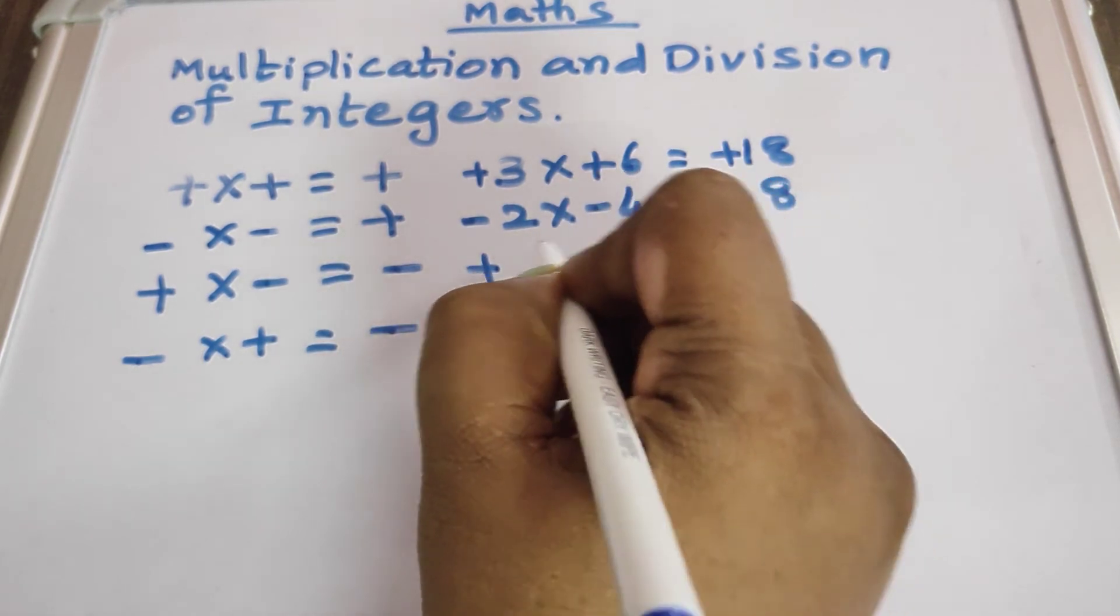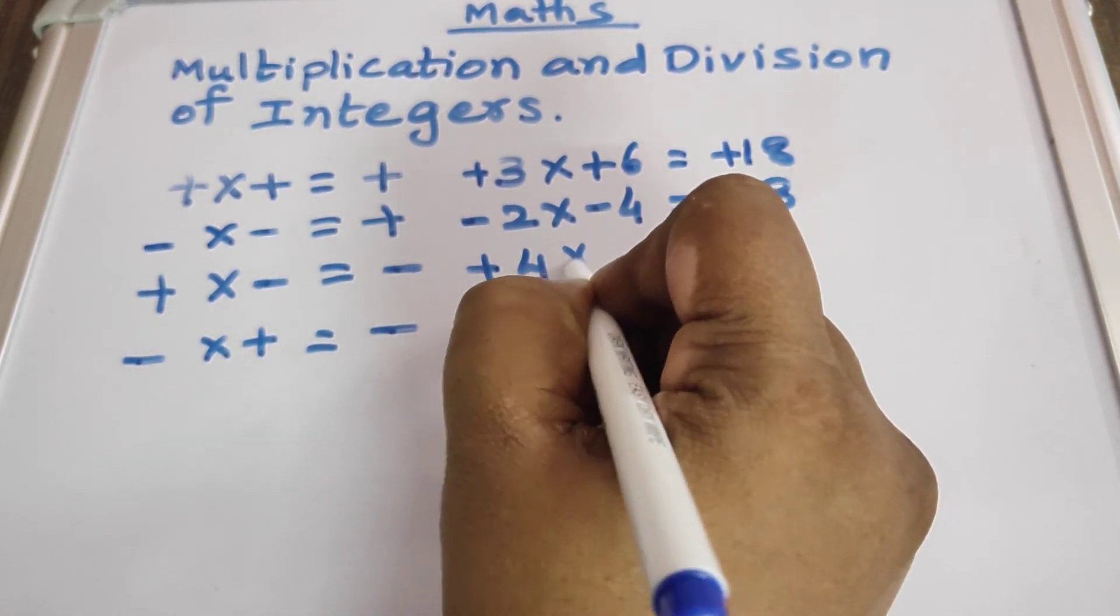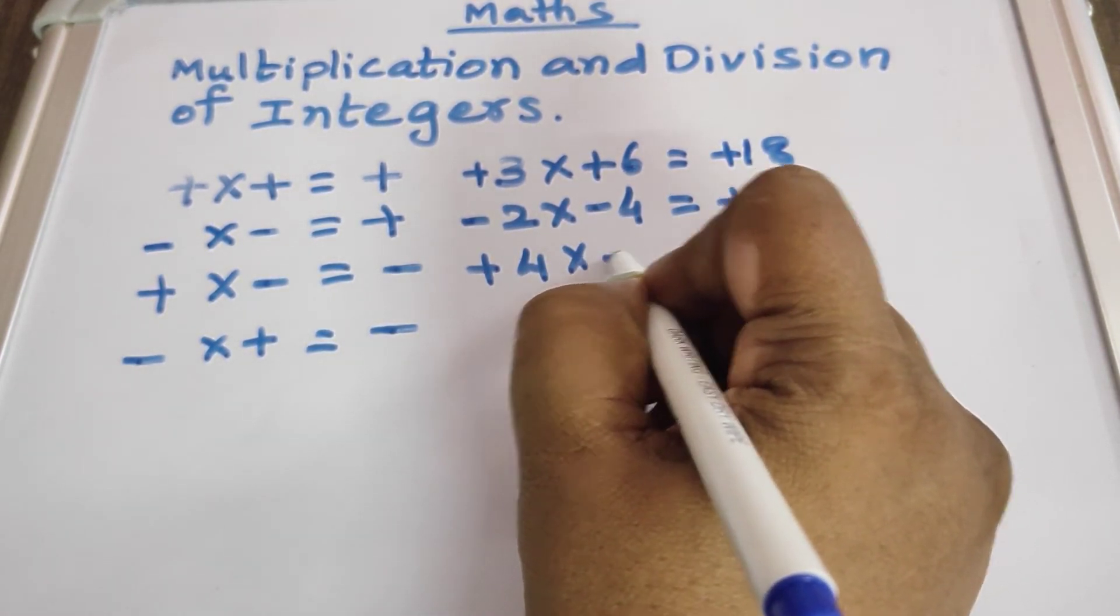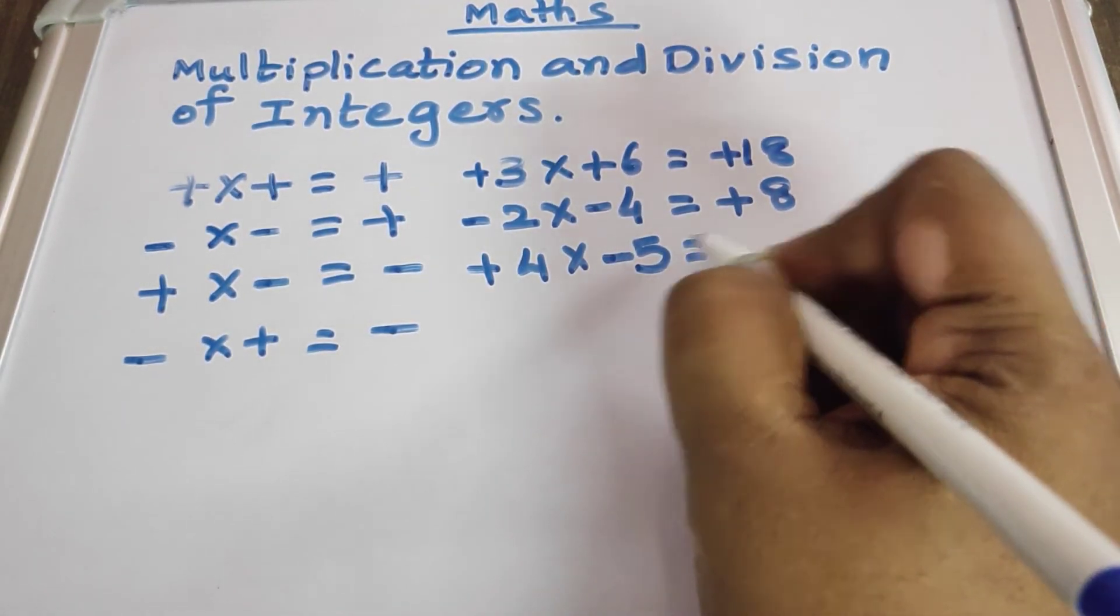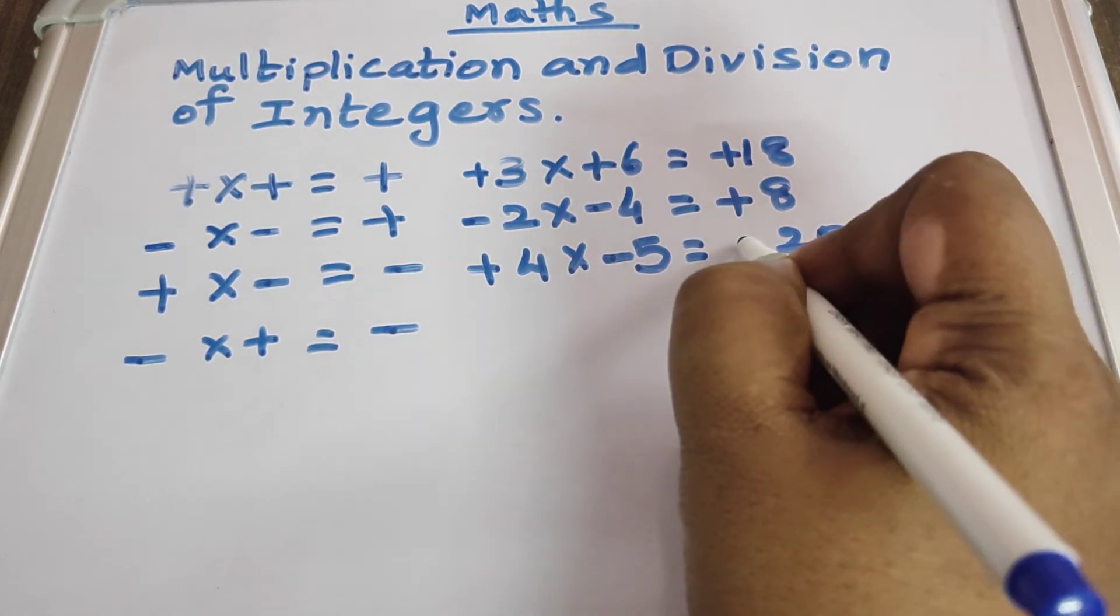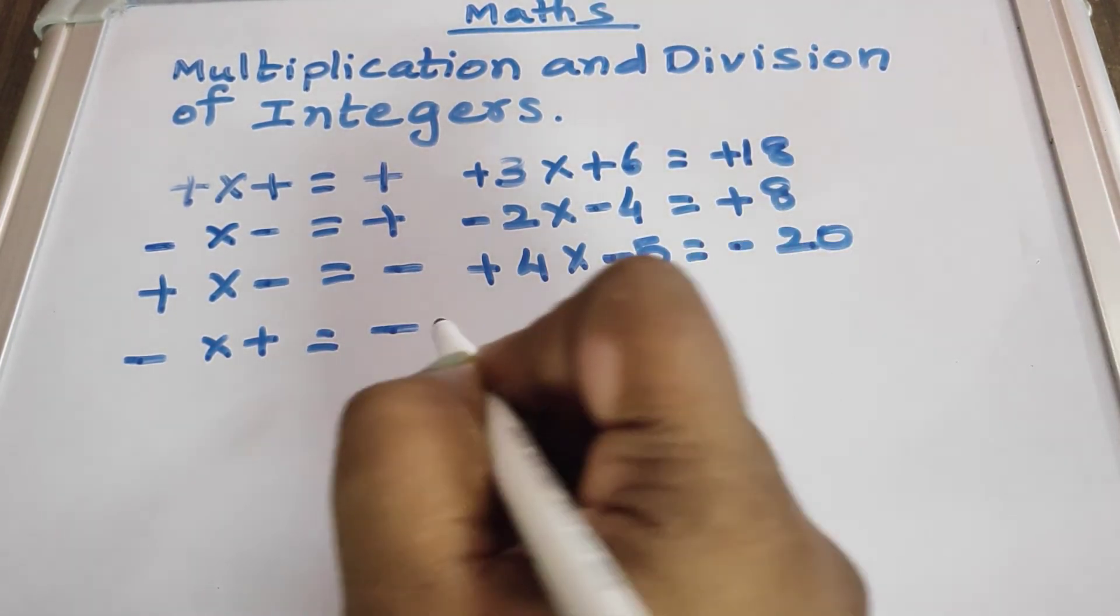Here, plus 4 into minus 5. 4 5's are 20 and the sign will come minus sign.